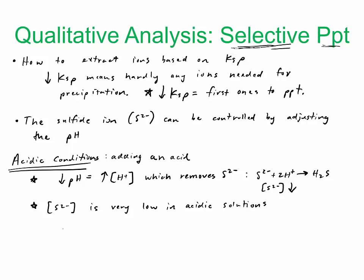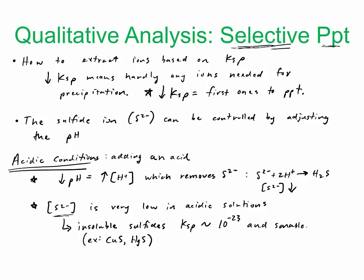What this means is that insoluble sulfides — the ones that take very, very little sulfide ions to precipitate — are going to precipitate under acidic conditions. The ones with super low KSPs are going to precipitate before the ones with higher KSPs. For example, copper sulfide or mercury sulfide — insoluble sulfides with KSPs around 10⁻²³ and smaller will precipitate before the ones with larger KSPs.